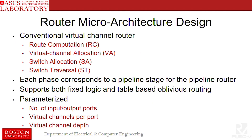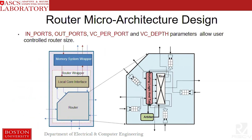The default routers in BRISC-5 are conventional virtual channel routers, where each phase corresponds to a pipeline stage in the router. In the routers, the number of input/output ports, virtual channels per port, and the virtual channel depth is parameterized, so a user can configure the routers to fit any specific resource usage or performance requirements.